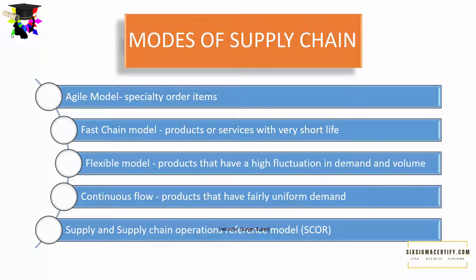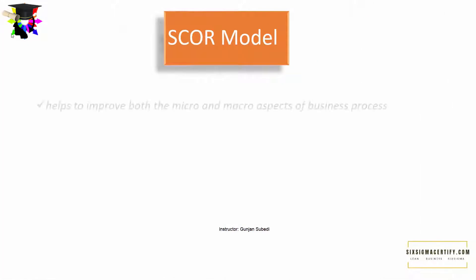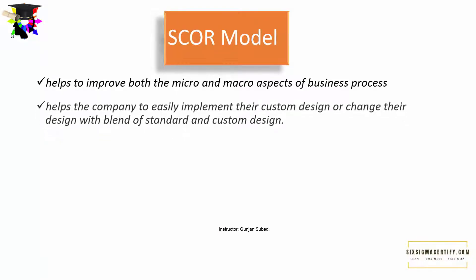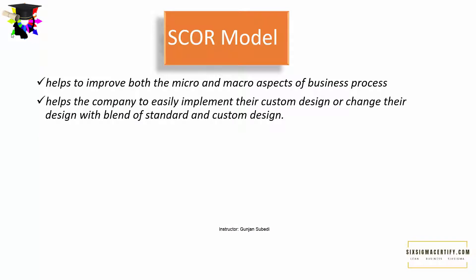Out of all these models, for strategic decision making and its acceptance and use in almost all forms of business, the SCOR model is the most promising one, and we will also study the SCOR model in this course. The SCOR model helps to improve both the micro and macro aspects of the business process and also helps the company to easily implement their custom design or change their design with a blend of standard and custom design. So let's dig into the SCOR model further.